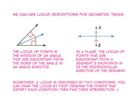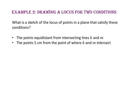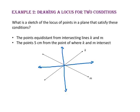Sometimes a locus is described by two conditions. You can draw the locus by first drawing the points that satisfy each condition, then find their intersection. In example 2, we will draw a locus for two conditions. What is a sketch of the locus of points in a plane that satisfy these conditions? First, the points equidistant from intersecting lines K and M — let's draw intersecting lines K and M, then draw the locus of equidistant points. Notice that these lines are the angle bisectors of the angles formed.